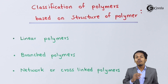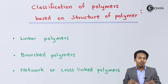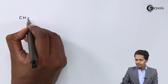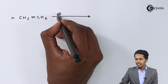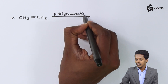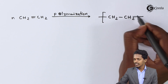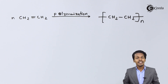Linear polymers are basically long chain polymers which don't have an extended branch. For example, consider ethene: CH₂=CH₂. If this molecule undergoes polymerization, we get a long chain of CH₂ groups that does not have extended branching. This kind of structure is known as a linear polymer.